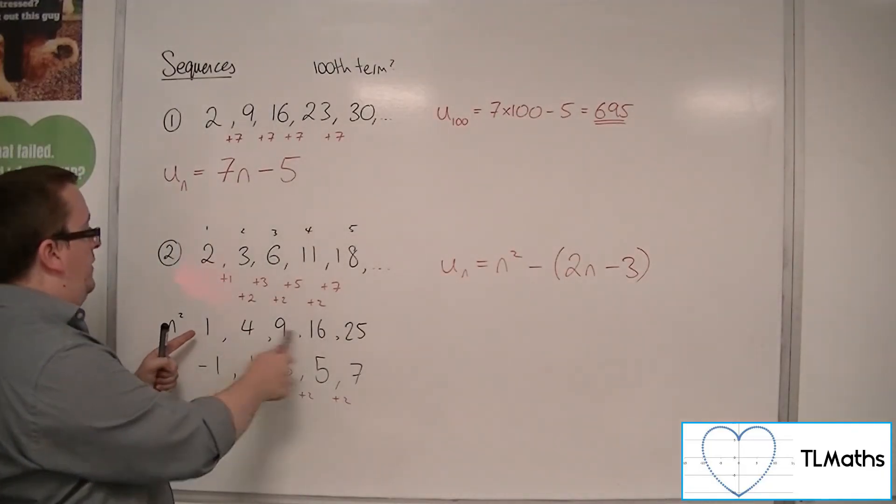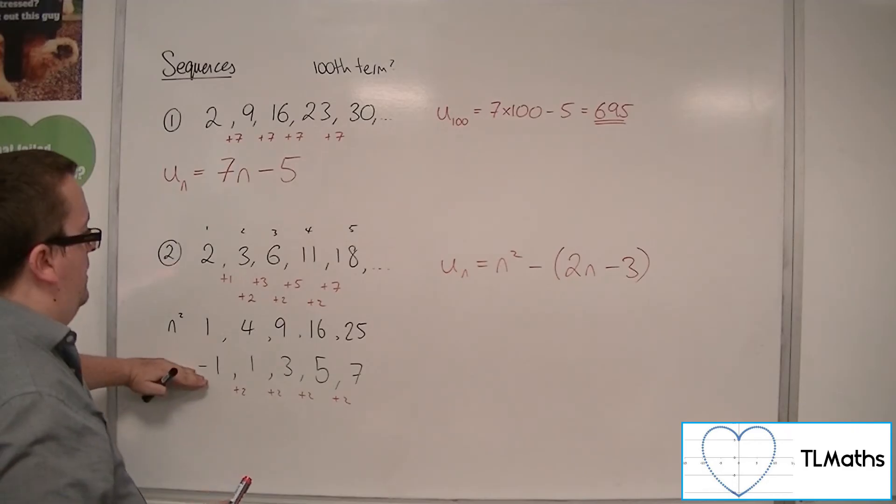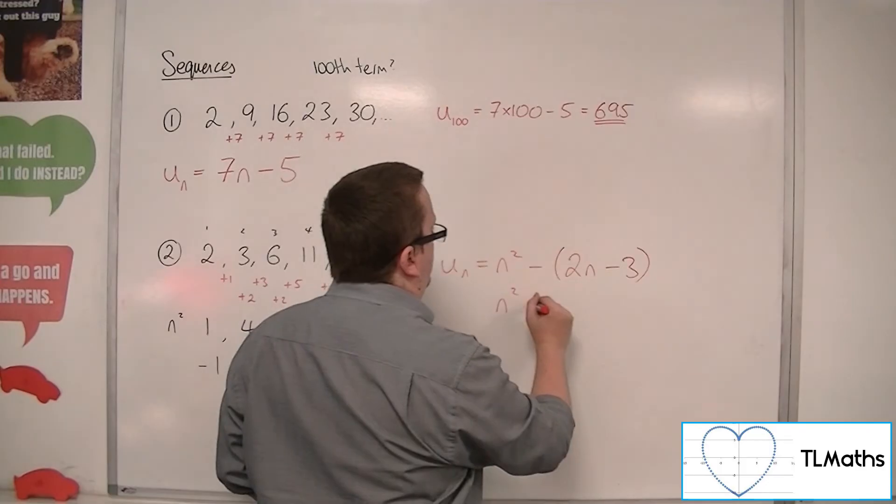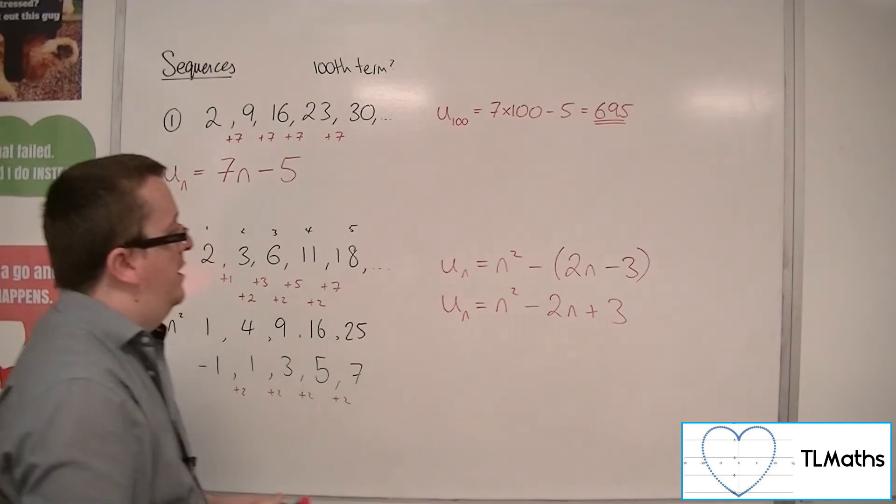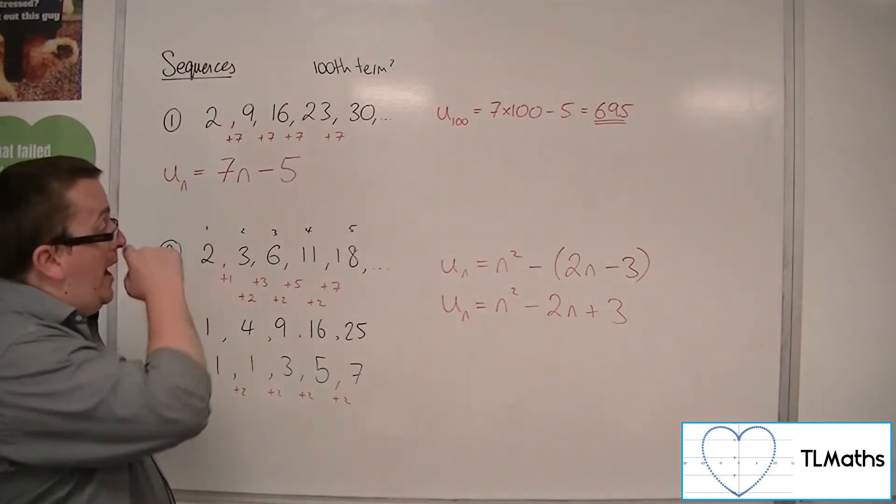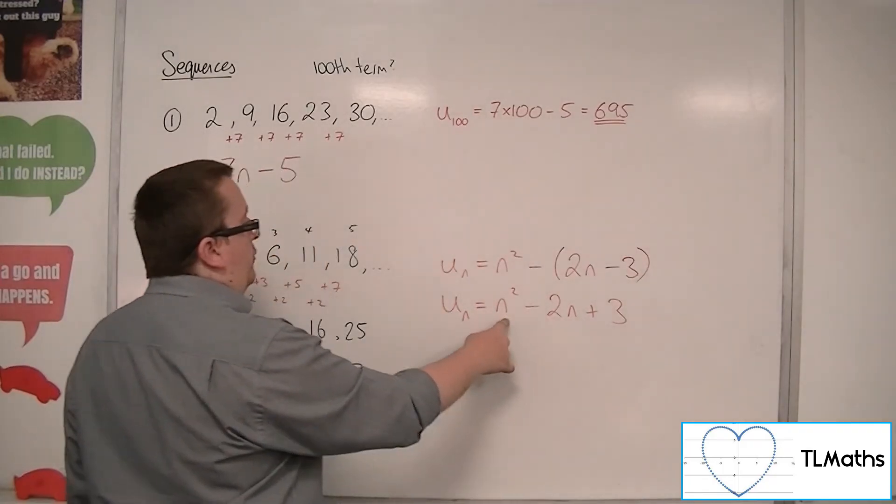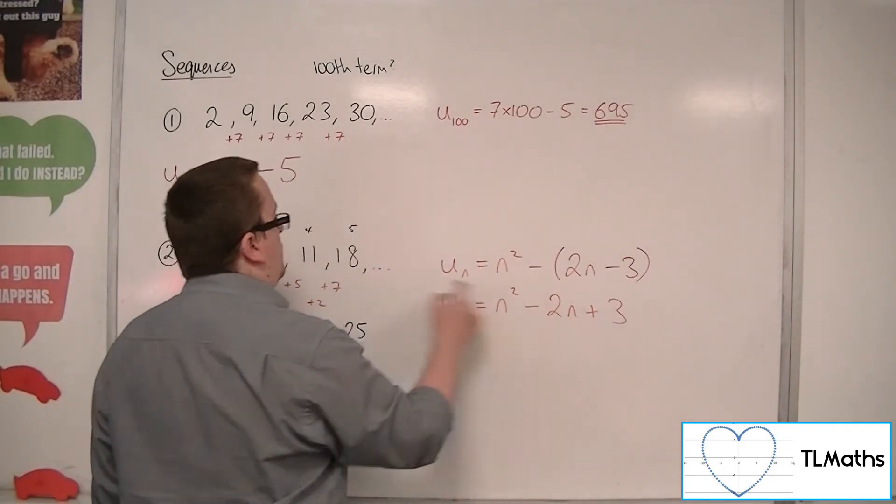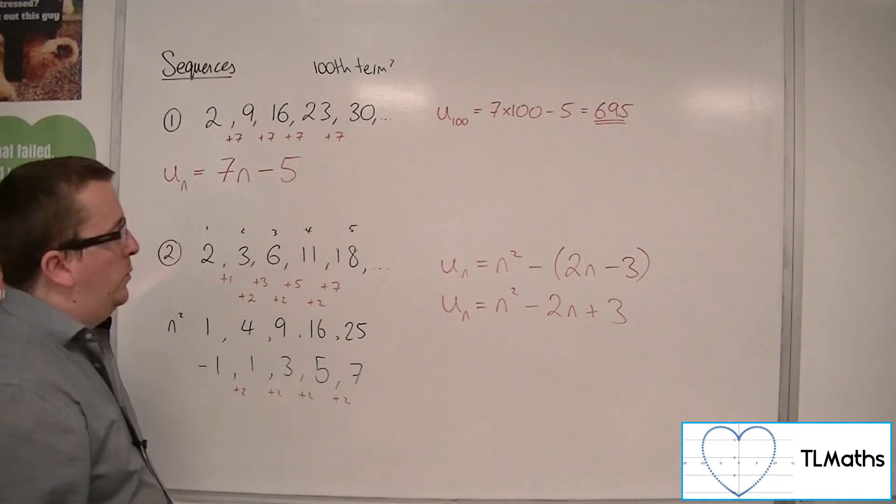So we did this sequence, take away that one, and that's what we got left with. And so this is n squared minus 2n plus 3. That is my nth term. So just to double check, let's say n is 5, we get 5 squared is 25, take away 10 is 15, plus 3 makes the 18. So that is the nth term for this sequence.